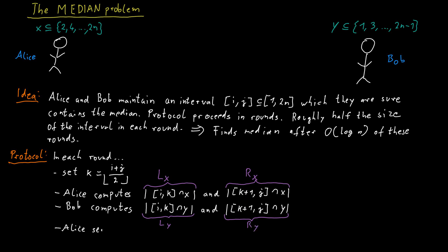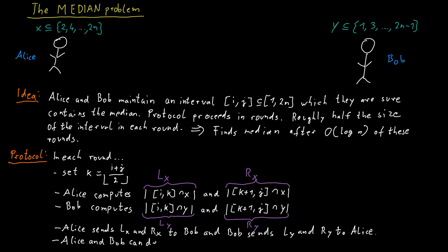Alice and Bob then exchange this information: Alice sends Lx and Rx to Bob, and Bob sends Ly and Ry to Alice. This information is sufficient for Alice and Bob to determine whether the median element lies in the first half or the second half of the interval, and so both of them can update the interval accordingly — either continuing with (i to k) or (k to j). Let's look at a specific example to see why.